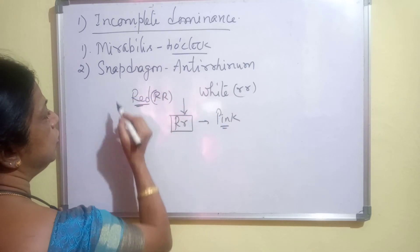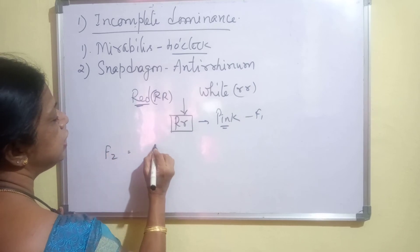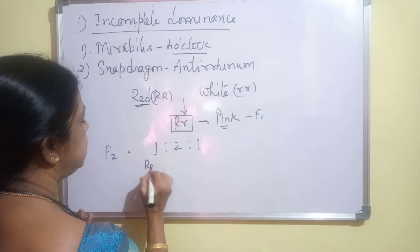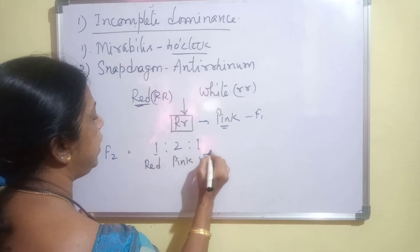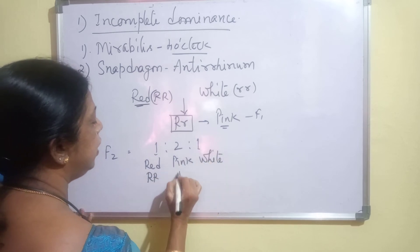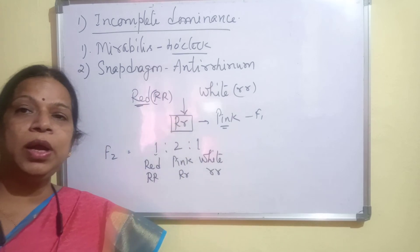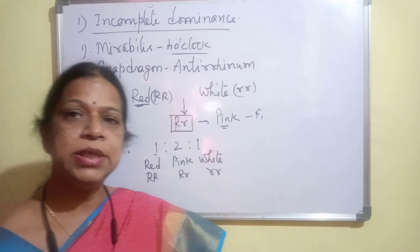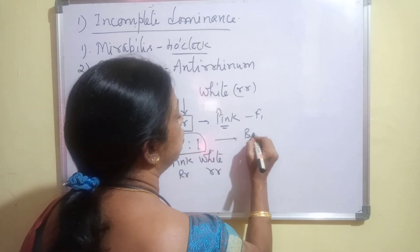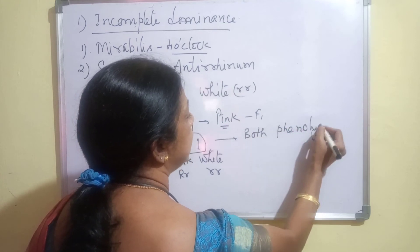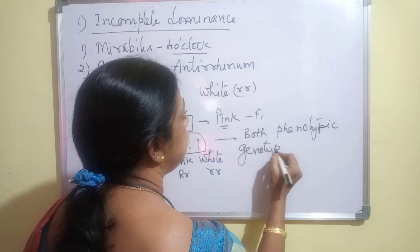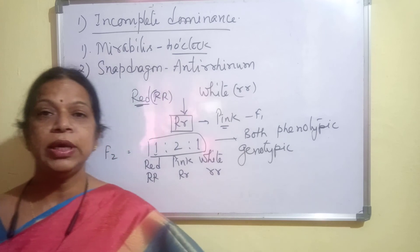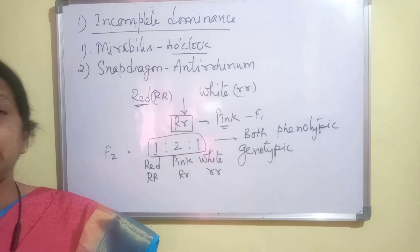This is in F1 generation. In F2 generation, the ratio is 1:2:1 — this is a genotypic ratio. Here we get red, pink, and white in this ratio. Red will be RR, pink will be Rr, and white will be rr. So we are getting three different phenotypes, meaning the phenotypic and genotypic ratio are the same. This 1:2:1 is both phenotypic as well as genotypic ratio in case of incomplete dominance — there is no distinction between the two.